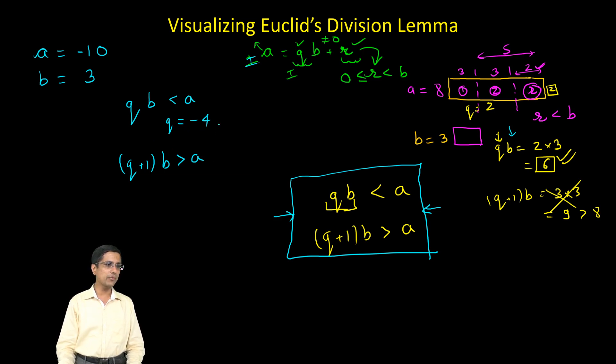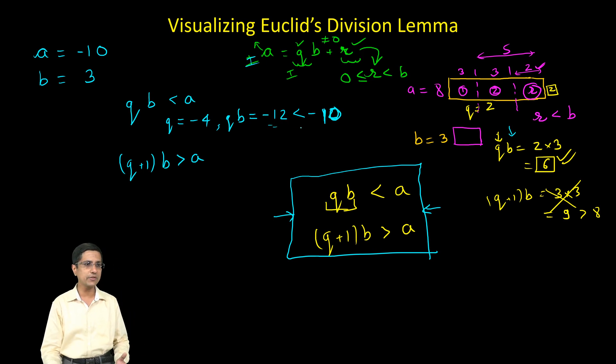For value of minus 4, QB comes out to be minus 12 and this minus 12 is of course less than minus 10 in negative terms. So this is more negative so of course it is smaller.